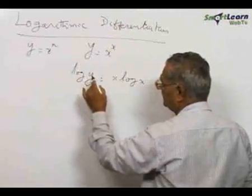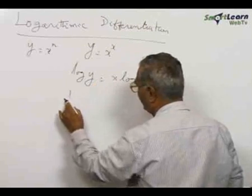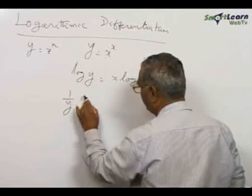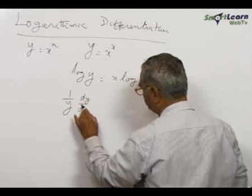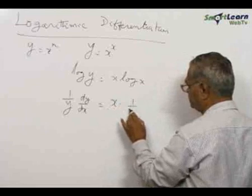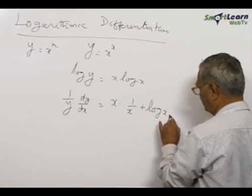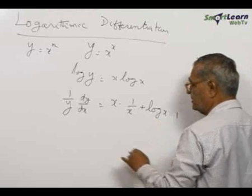The left hand side is a function of function, so when I differentiate log y I get 1 by y into dy by dx. In the right hand side you get x into 1 by x plus log x into 1. We apply the product rule.